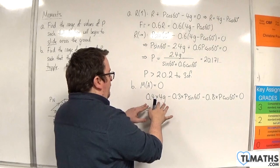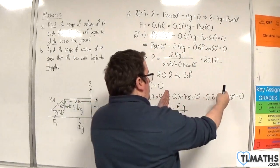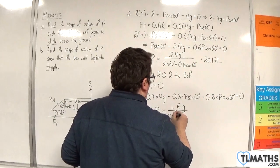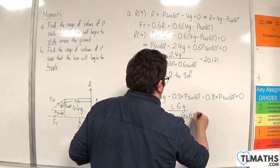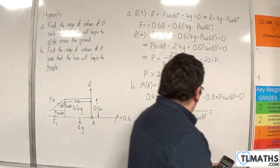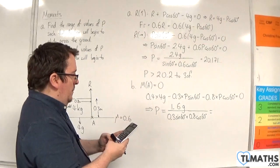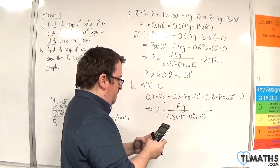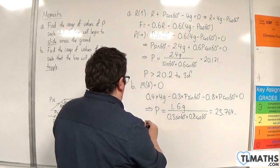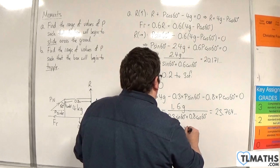So 0.4 times 4g gives 1.6g. Moving both P terms to the other side and factoring out P, then dividing through by the bracket (0.3 sine 60 plus 0.8 cosine 60), I get P equals 1.6 times 9.8 divided by (0.3 times sine 60 plus 0.8 times cosine 60), which gives 23.764. So P would have to be greater than 23.8 Newtons, to three significant figures, for the box to topple.